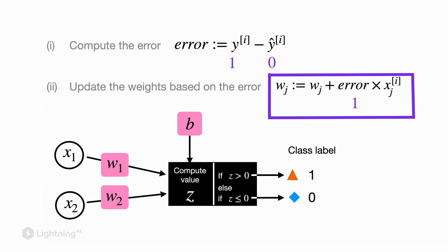Let's take a look at another interesting example where the true label is zero and the predicted label is one. So zero minus one equals minus one. In this case our output is too large, so our output was one however we want the perceptron to output zero.